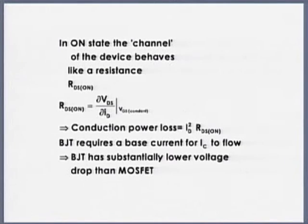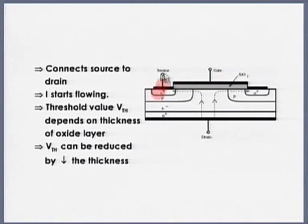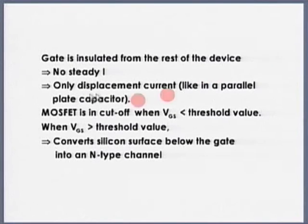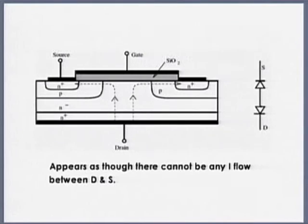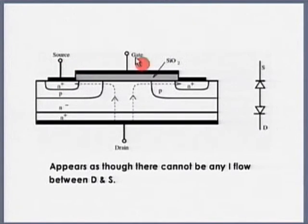What about the input stage — the driver circuit? The gate is insulated from the rest of the device, so if I apply a potential across it, only displacement current can flow, similar to a parallel plate capacitor. To turn it on, I apply a voltage across gate to source — I need to charge the gate-to-source capacitor. Input impedance at the gate tends to infinity. Therefore I require a very small steady-state current — practically negligible. It is a voltage-driven device, not a current-fed device unlike a BJT.